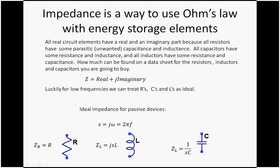Impedance is made up of a real and an imaginary part. Luckily for low frequencies we can treat resistors, capacitors, and inductors as ideal. So the ideal impedance for passive devices with s equaling jω equals 2πf.